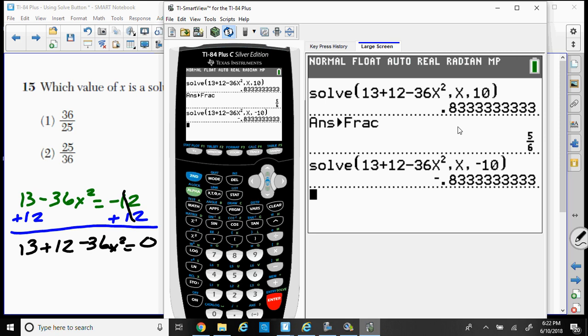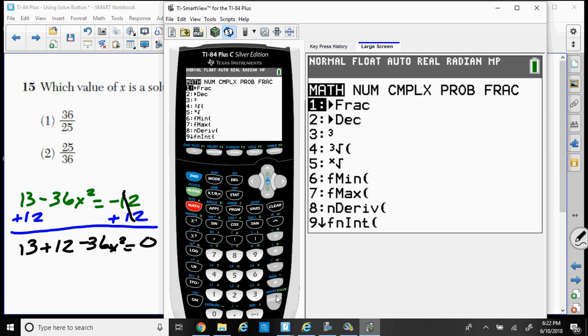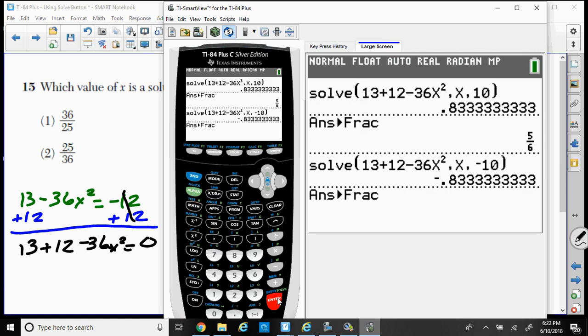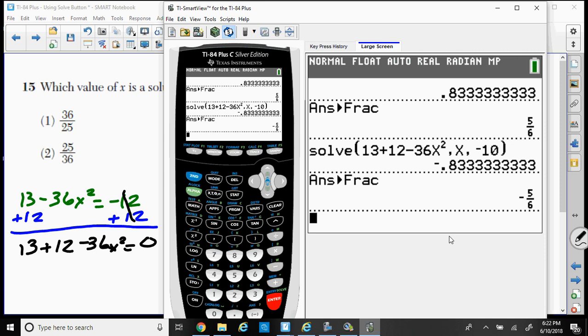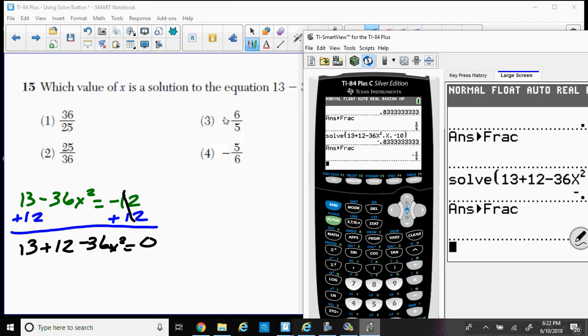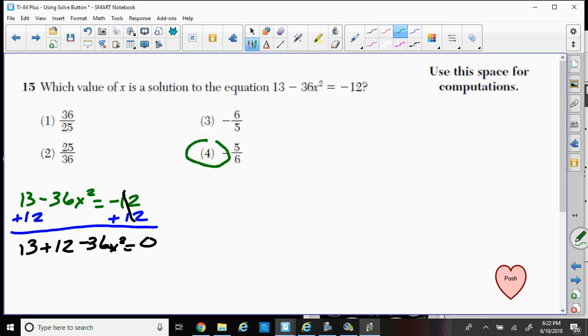This time I get the same thing, but a -8.333 repeating. And let's change that to a fraction by pressing math, the number 1 fraction, changing that answer from a decimal to a fraction, and we get -5/6. And I think that answer is there. I think that was the fourth one. Yes. So our answer is choice answer 4, -5/6. So choice 4.